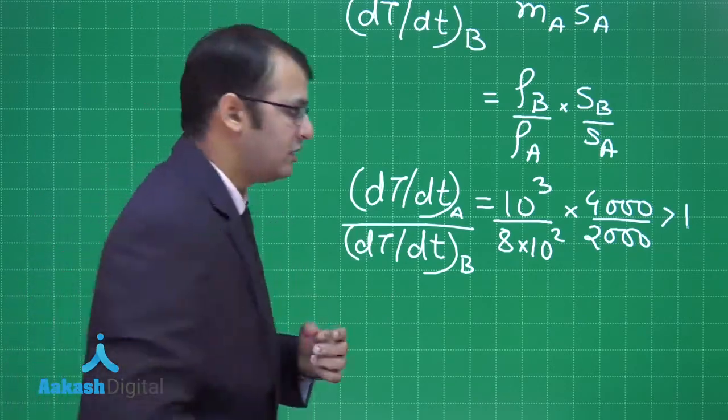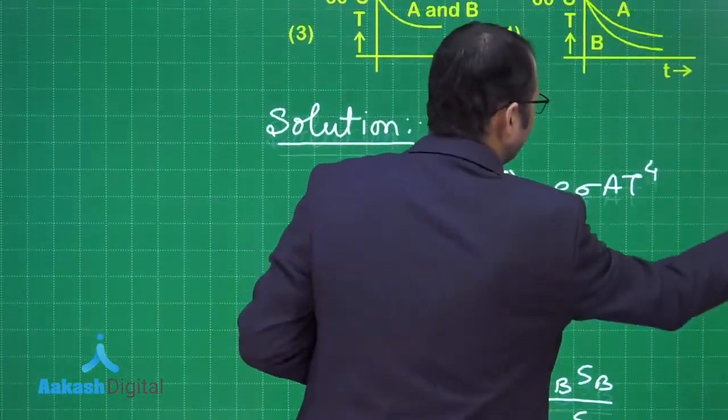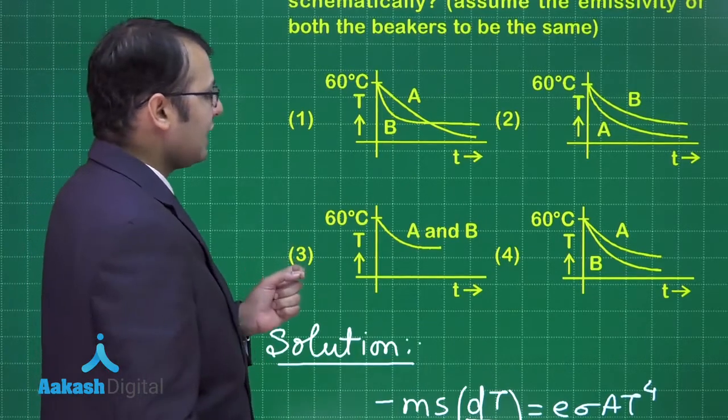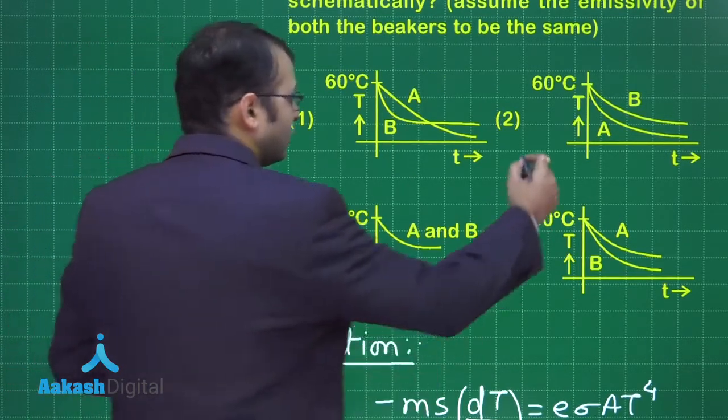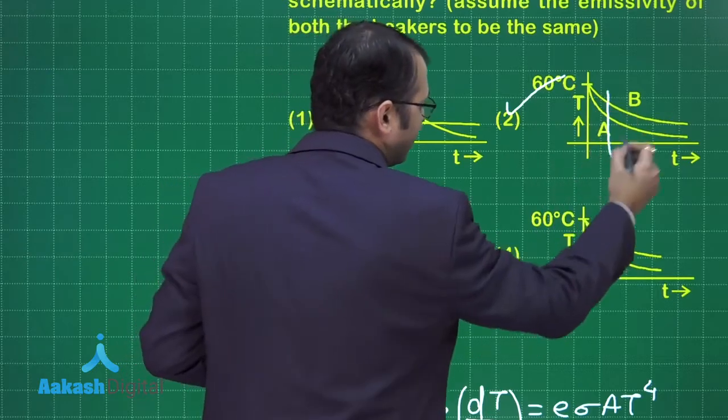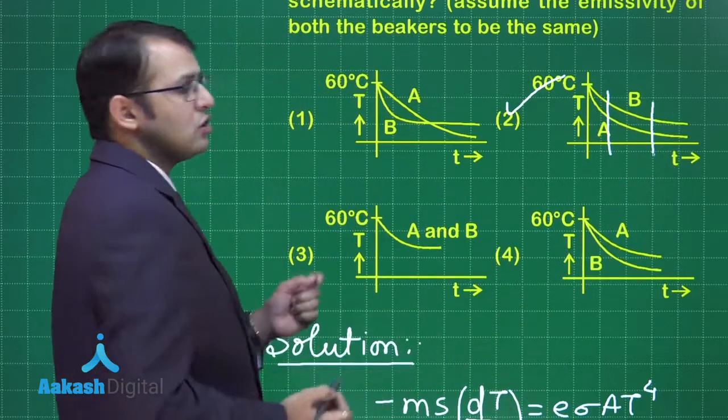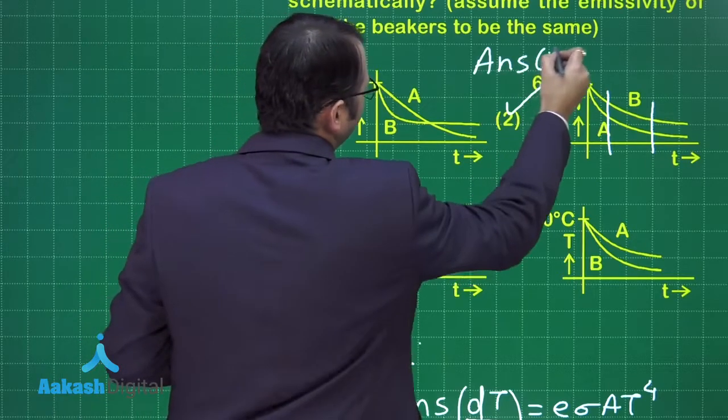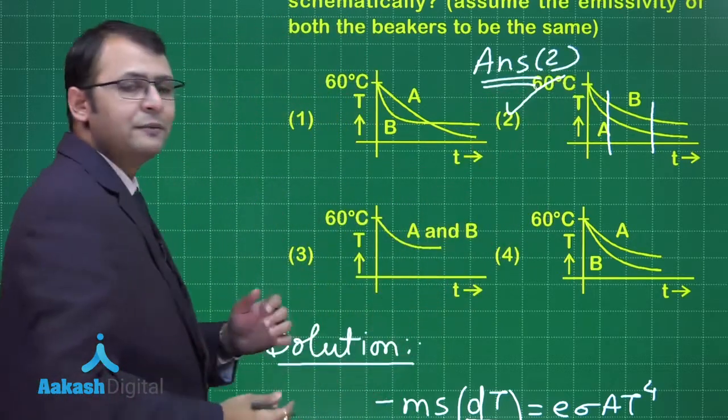Let's see which is the best suited option among the four. If you understand, here is option number 2, where for a given instant of time, the rate of change of temperature of A is higher. So the answer to this question would be option number 2.